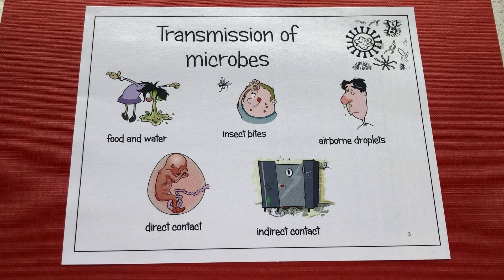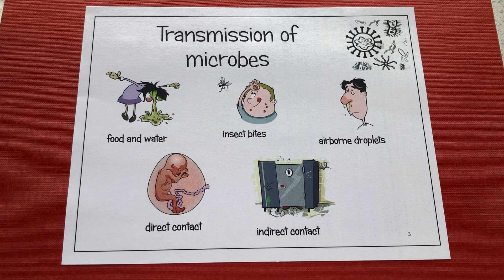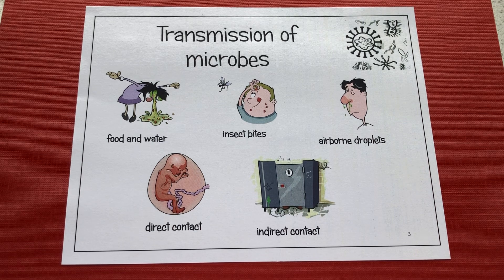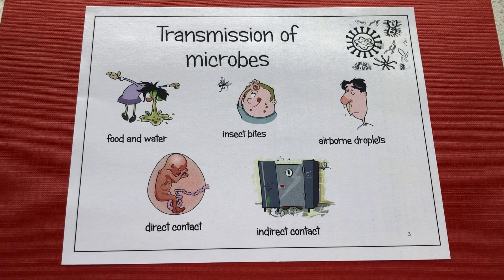We've got direct contact, where two people touch each other, whether that's just touching the hand or skin in any way. We've also got the direct contact of a mother to her unborn child. Then we've got indirect contact — this is where somebody touches something like a door handle, and then somebody else touches that, transmitting the microbes from one person to the next.